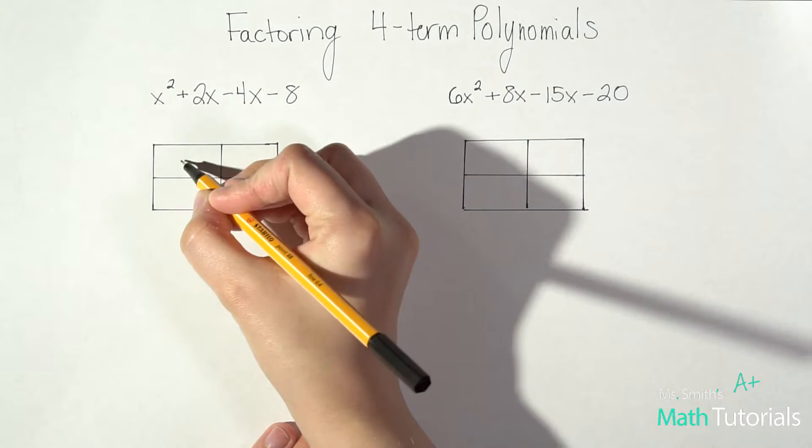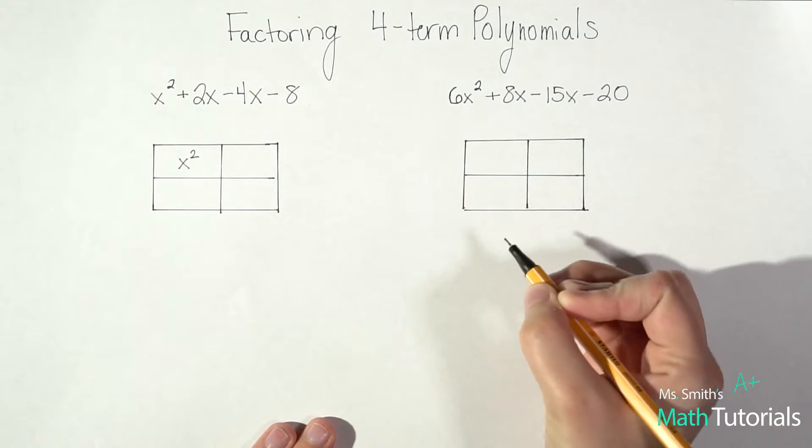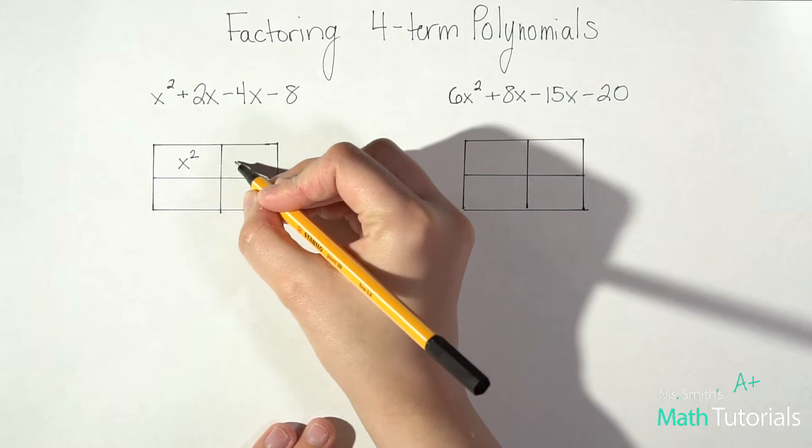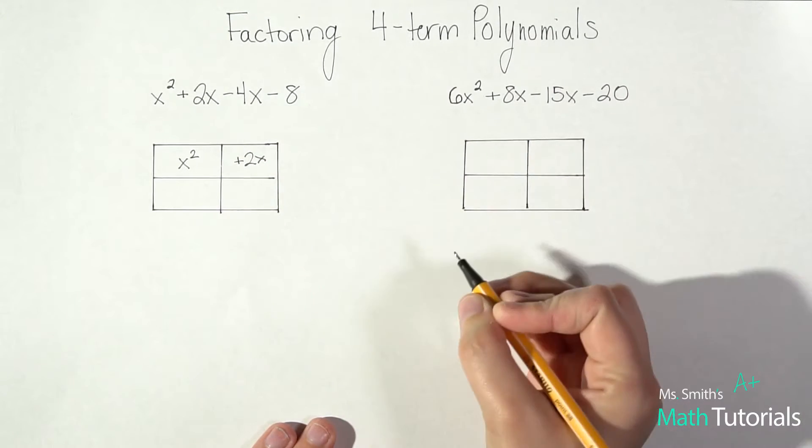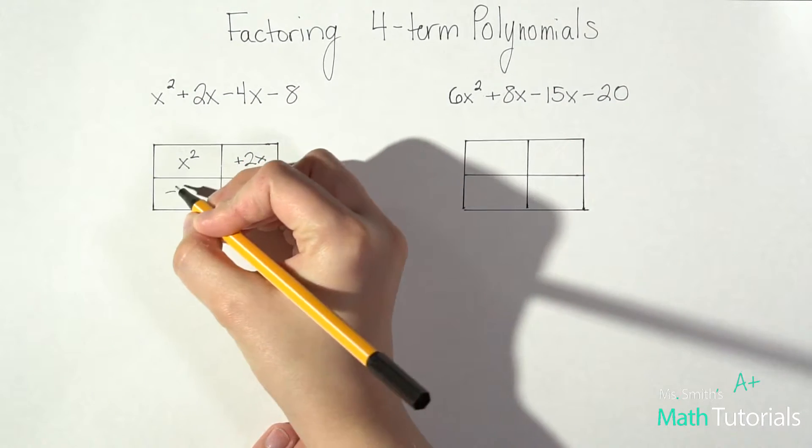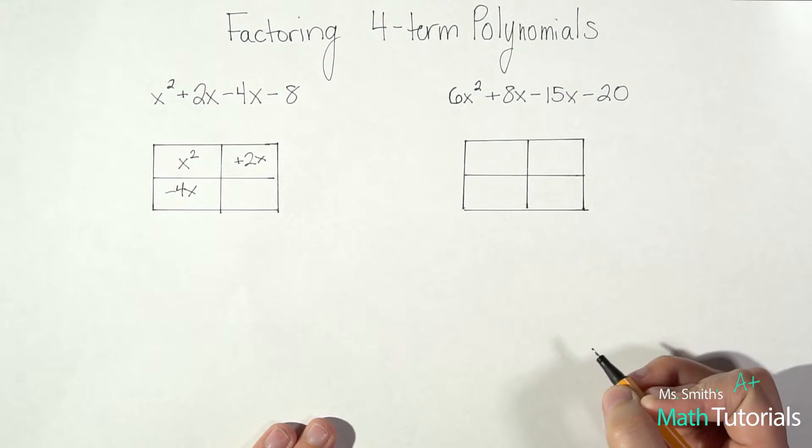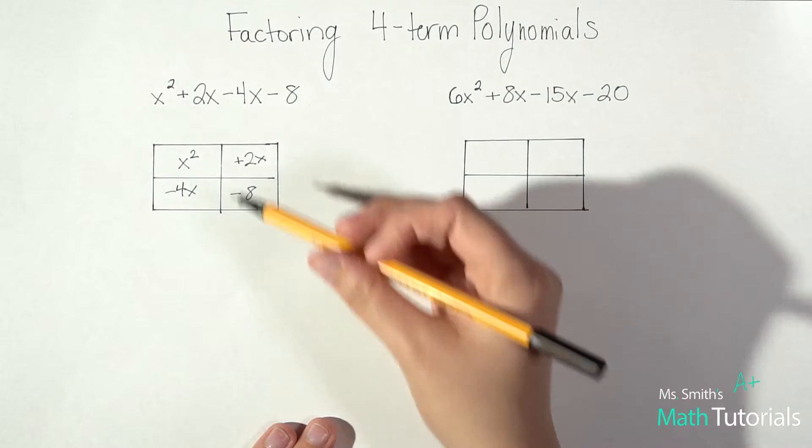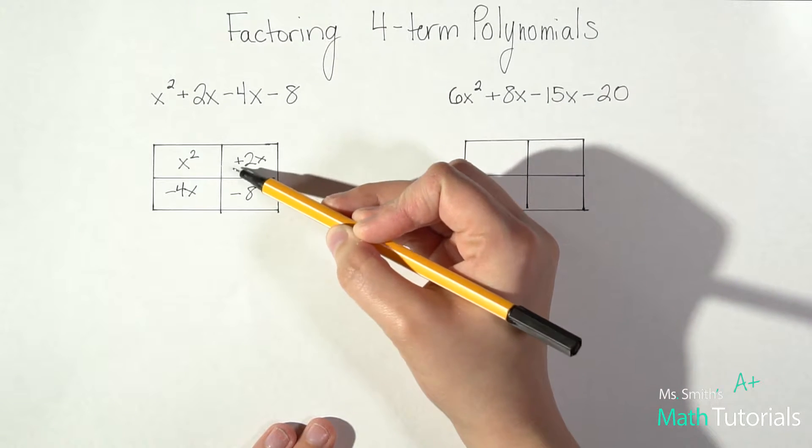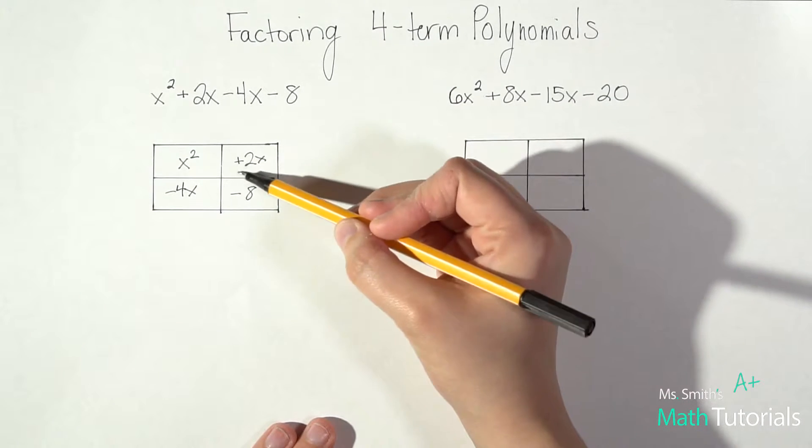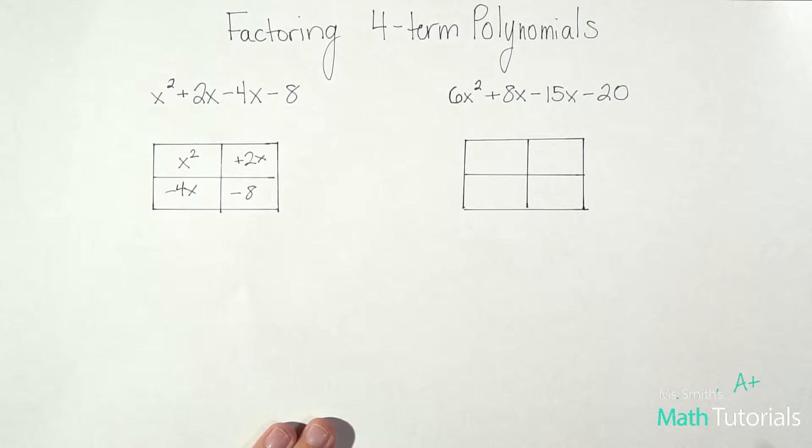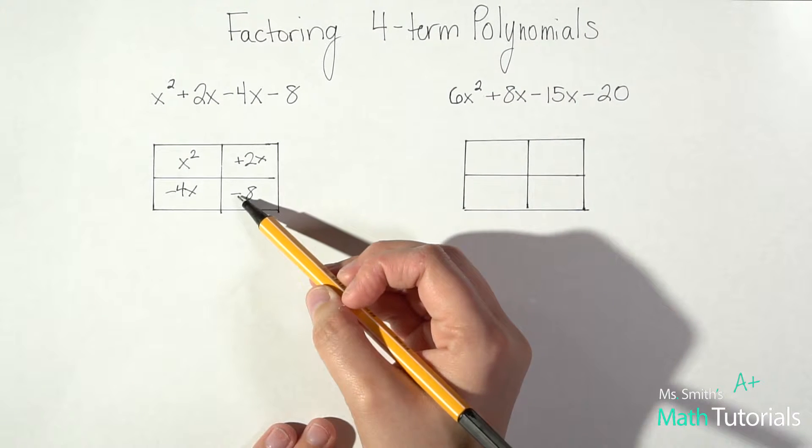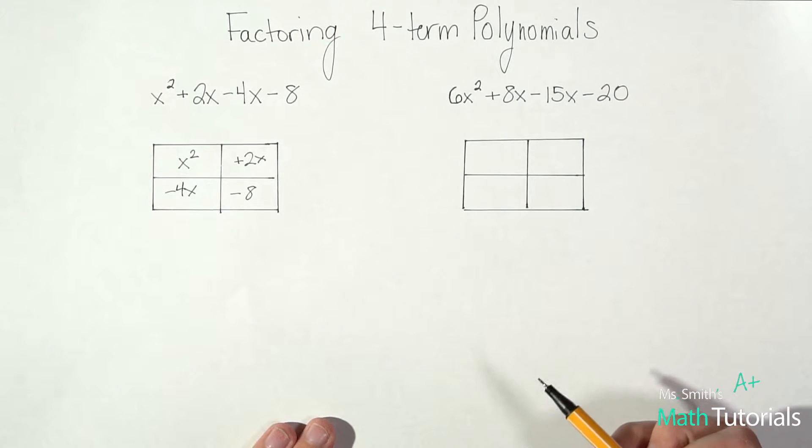So x squared will go in our first box, plus 2x will go in our second box, minus 4x will go in the third box, and minus 8. Now you don't have to put a sign with the 2x because it's positive but I just like to put it there to remember that that is a positive 2x. It's definitely necessary if it's a negative number.